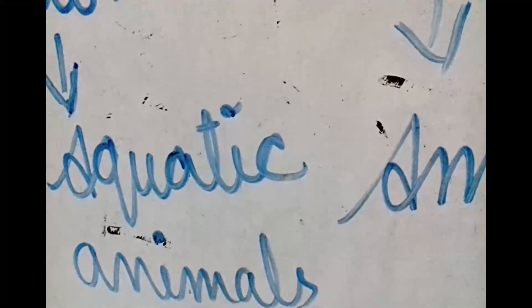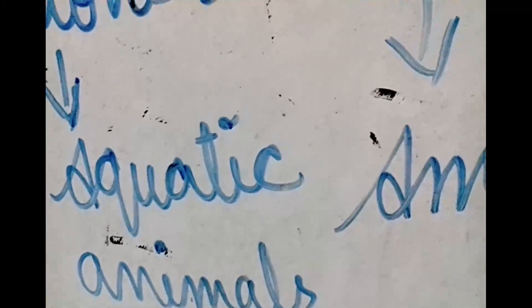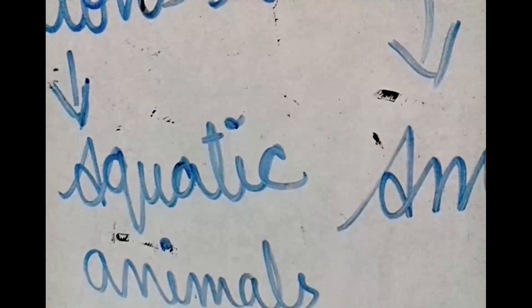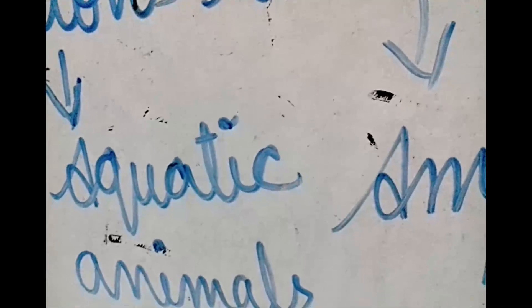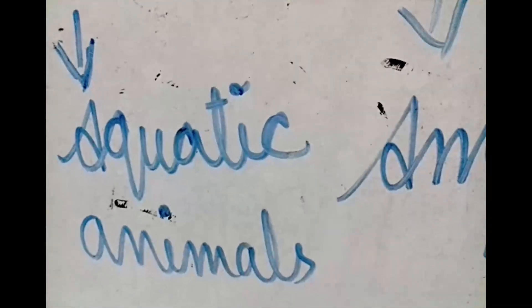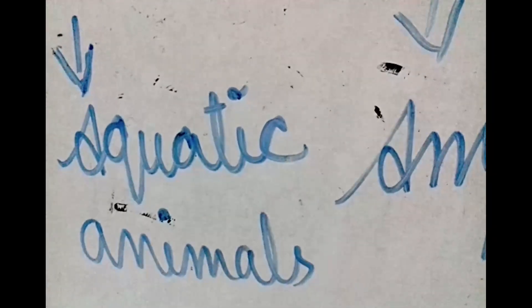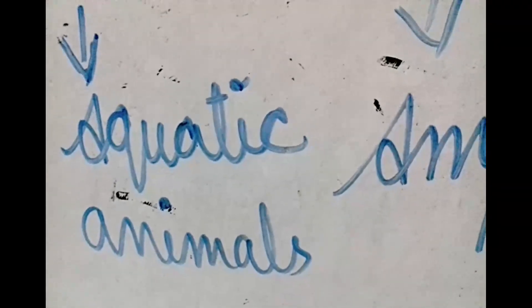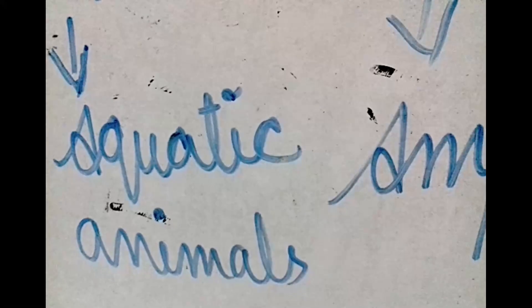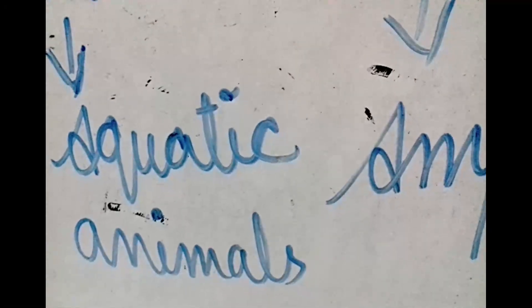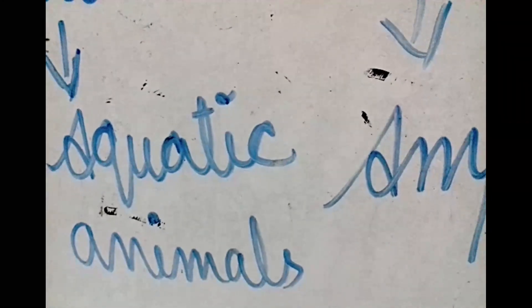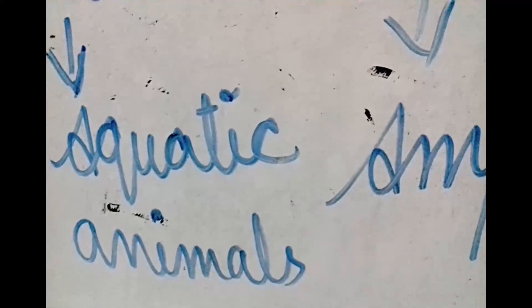Aquatic animals have webbed feet to help them push water back while swimming. Most of them breathe through gills. Exceptions like whales breathe through lungs because a whale is a mammal. Some of them have a thick layer of fat called blubber under the skin to keep them warm and help them float.